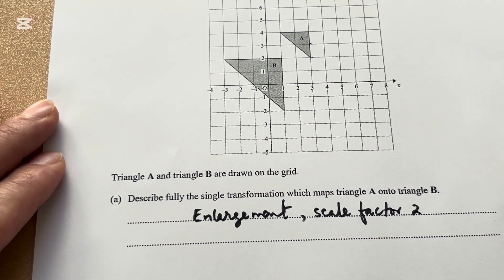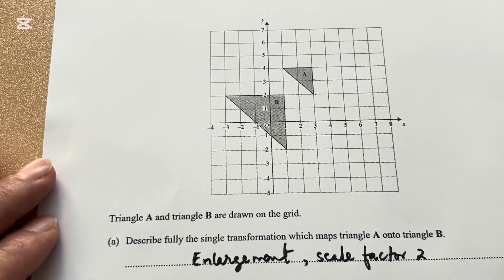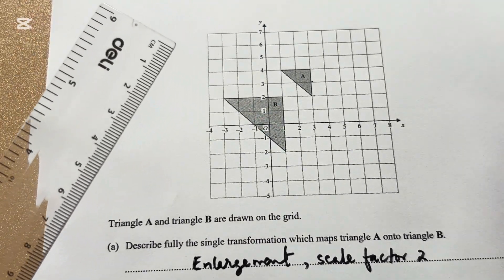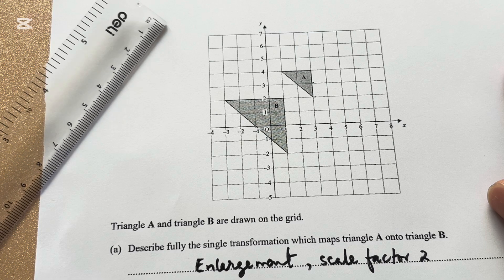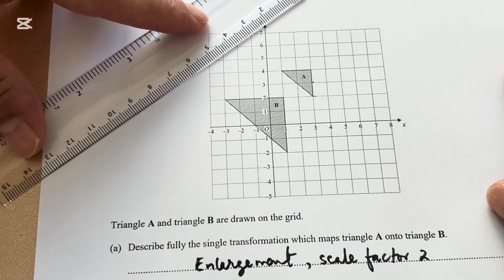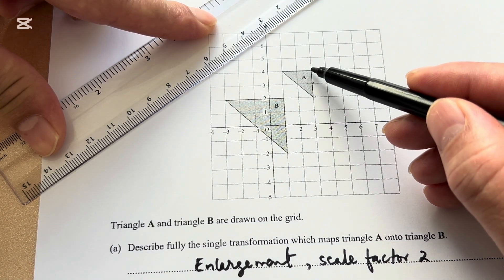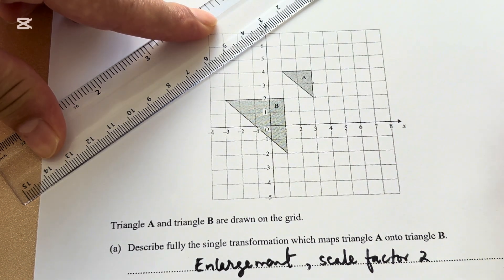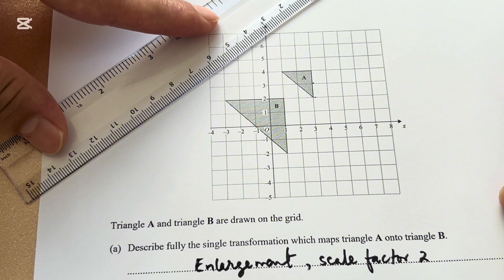The last thing is we need to find the center of enlargement. Take the ruler and draw lines joining the corresponding vertices. Here we have this vertex corresponds to this vertex. Let's draw a line.